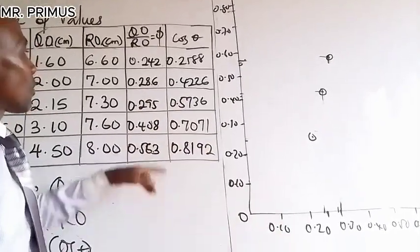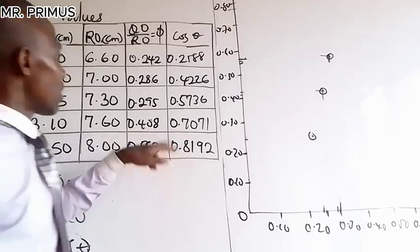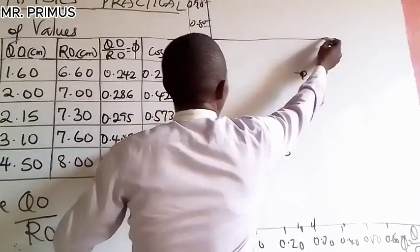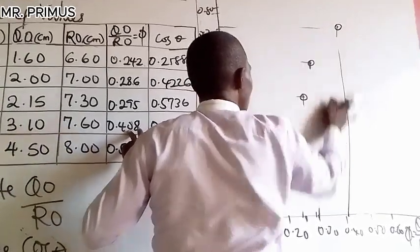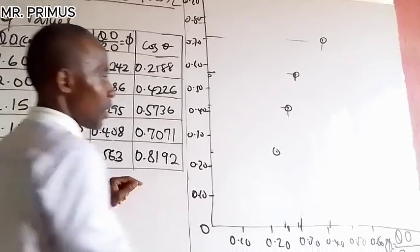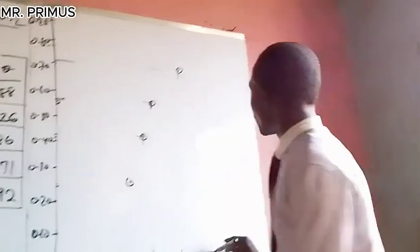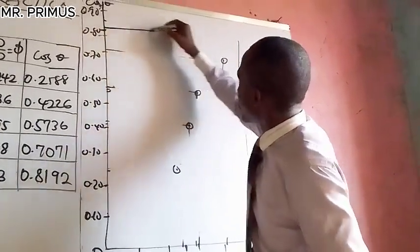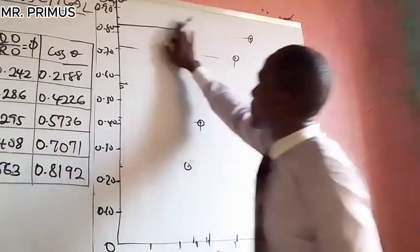This is a rough graph, so you can do better with a graph sheet. The next point: QO/RO is 0.4079 — approximately 0.41 — and the last one is 0.5625 on the horizontal with cos(theta) of 0.7071 — approximately 0.71. So that's plotted here. Now you can join the lines.